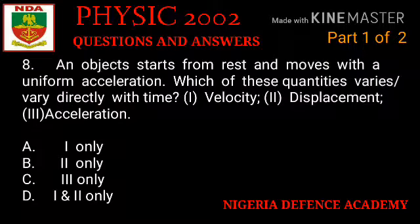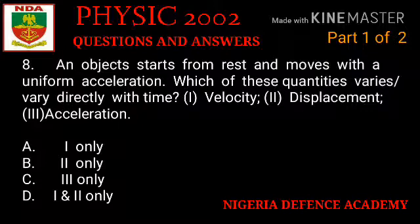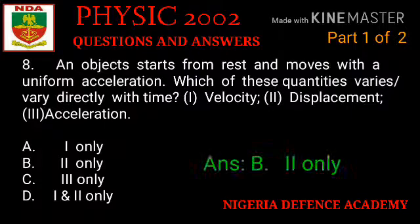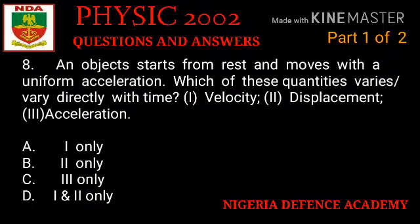Question number eight: an object starts from rest and moves with uniform acceleration. Which of these quantities varies directly with time? I. Velocity. II. Displacement. III. Acceleration. Option A: I only. Option B: I and II only. Option C: I, II, and III only. Option D: I and III only. The right answer is option B — I and II only.